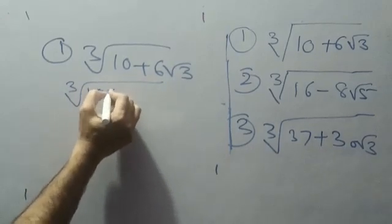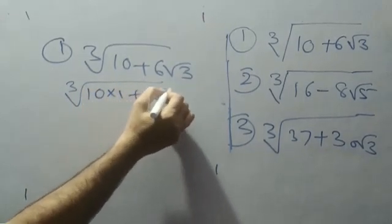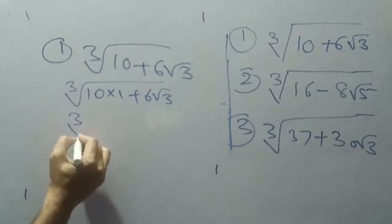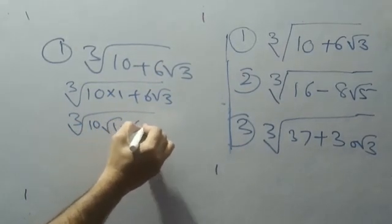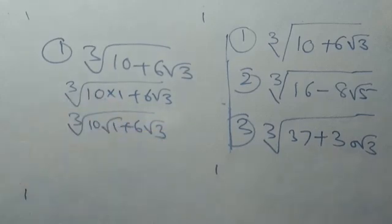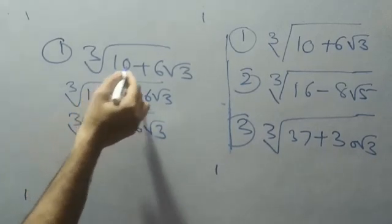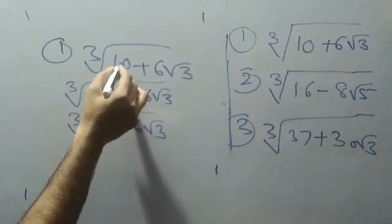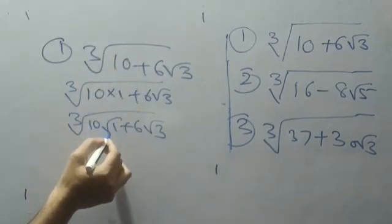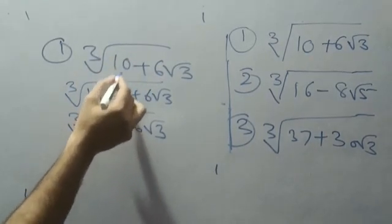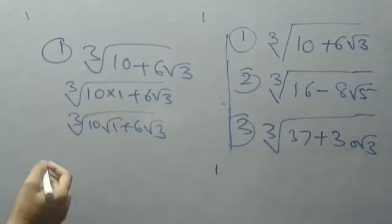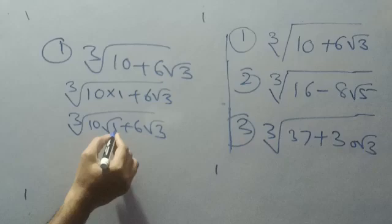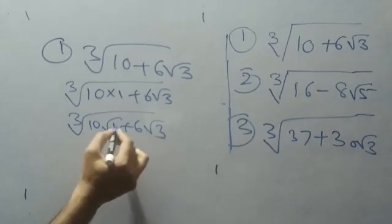I will write this as 10×1, so this is 10√1 + 6√3. Why only 1? Because you can take another like 2×5, but 2 and 5 cannot be written inside the root. So first you have to try with 1. If you are not getting the answer, then we will go for another number.